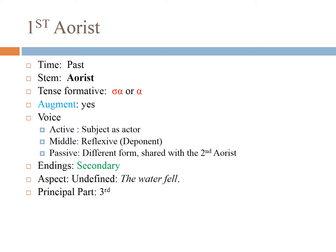This is a principal part — the third principal part. We've had present: luo. Future: luso. And this is the third principal part, the aorist. In this case it would be elusa.